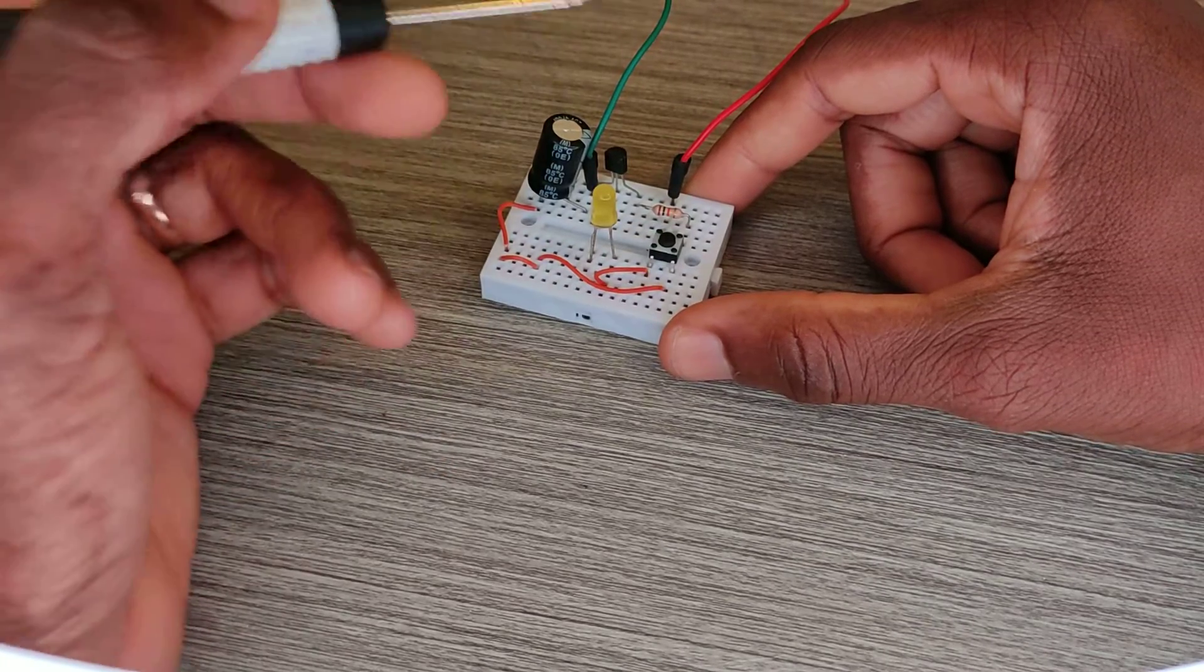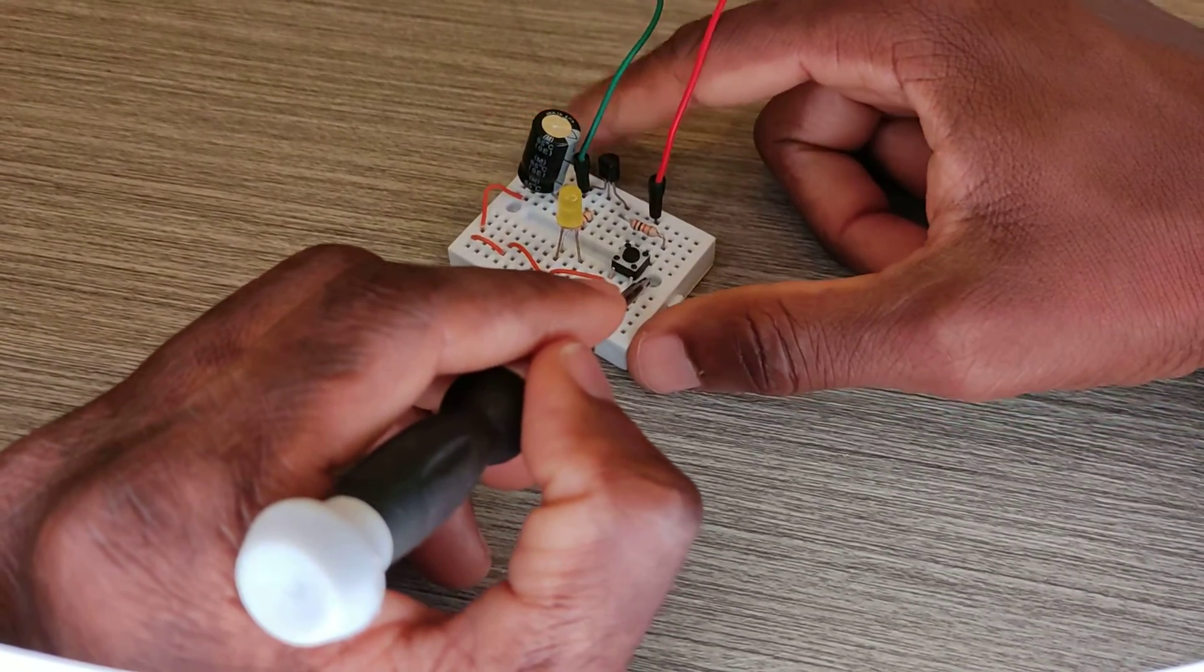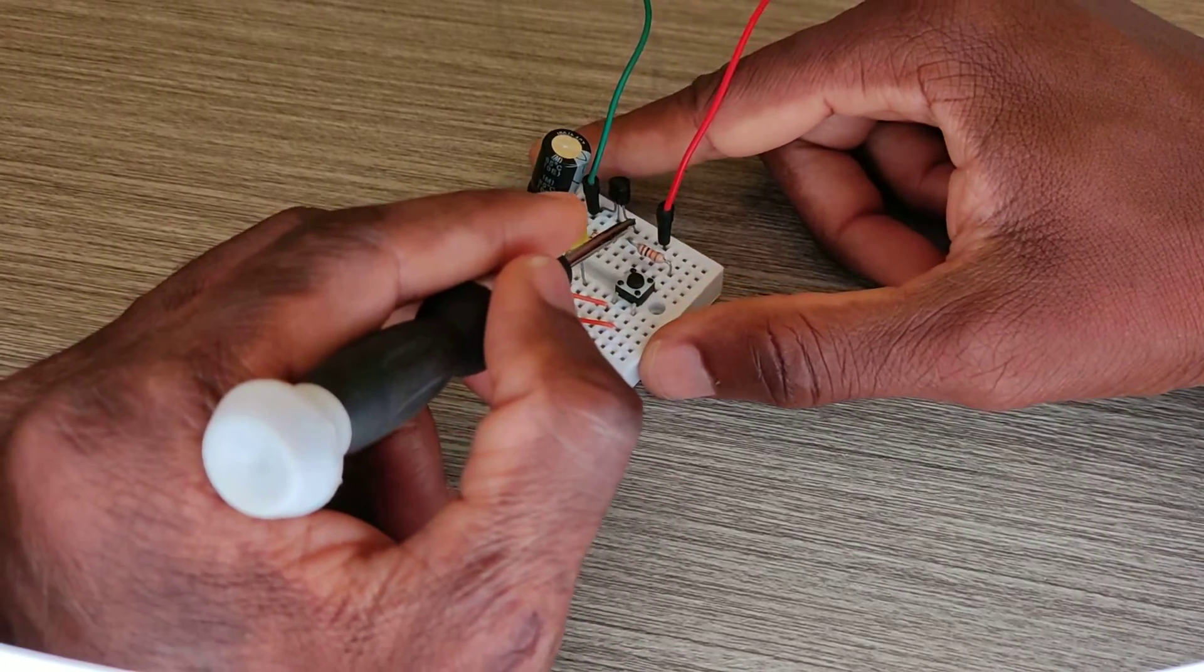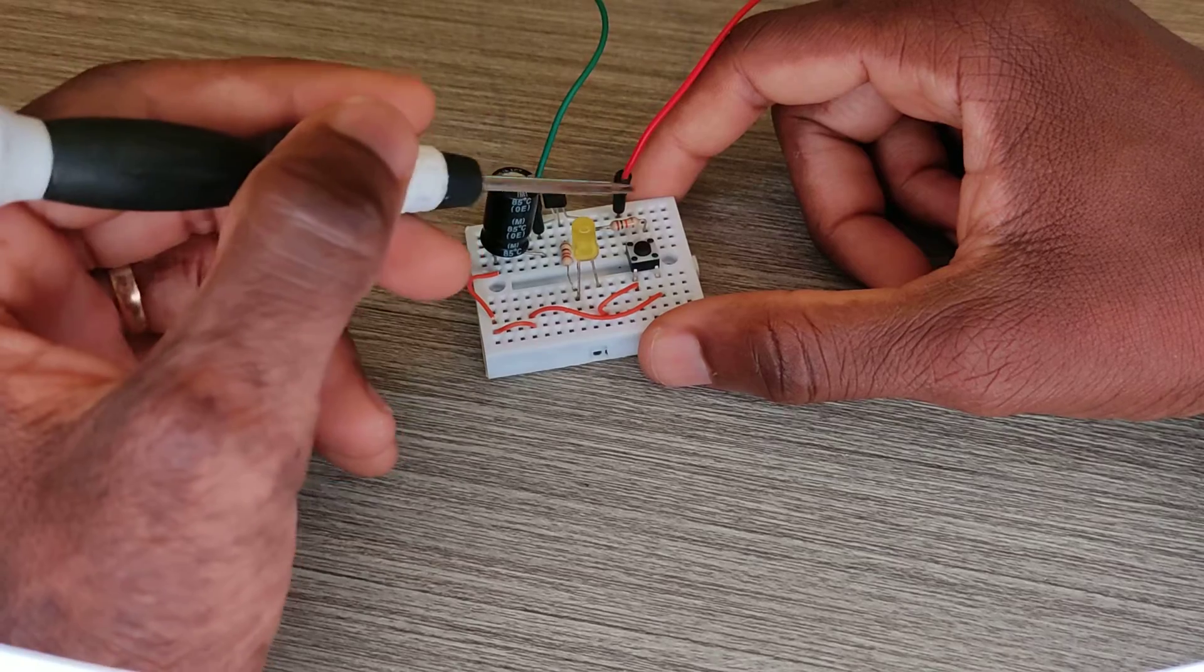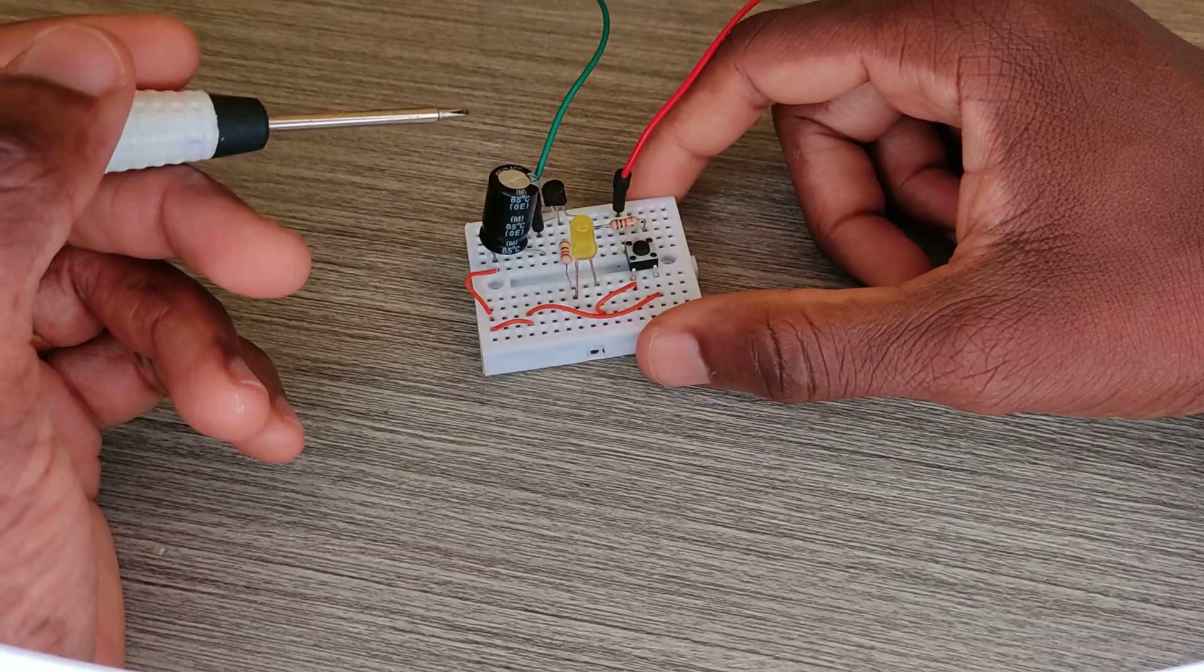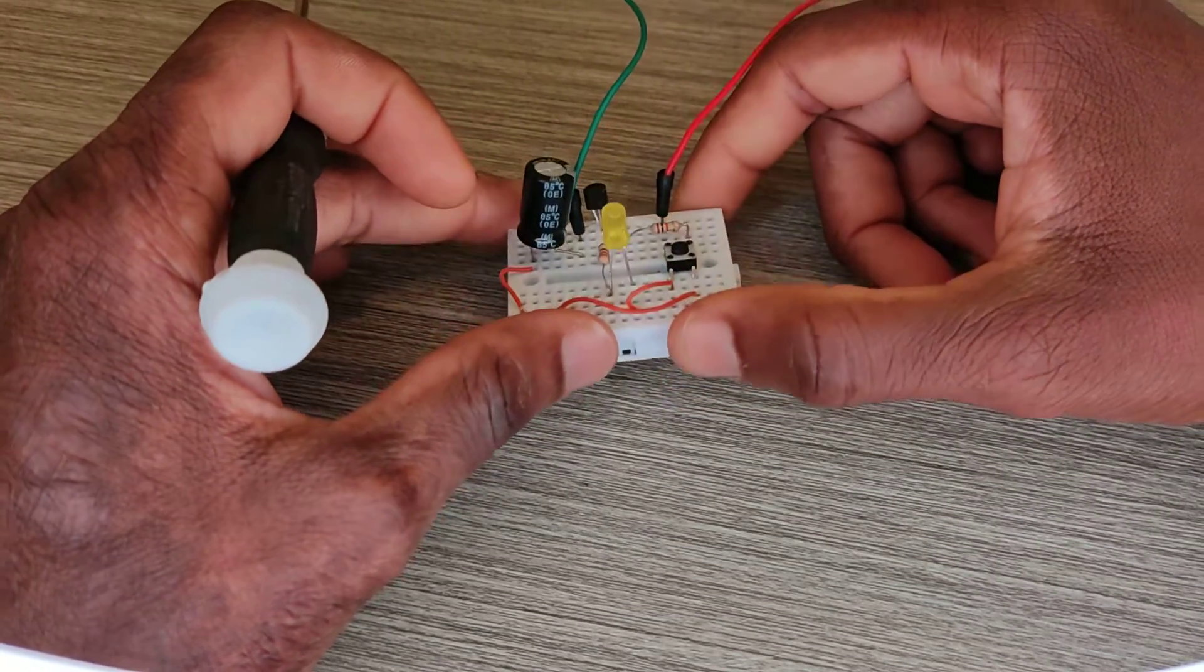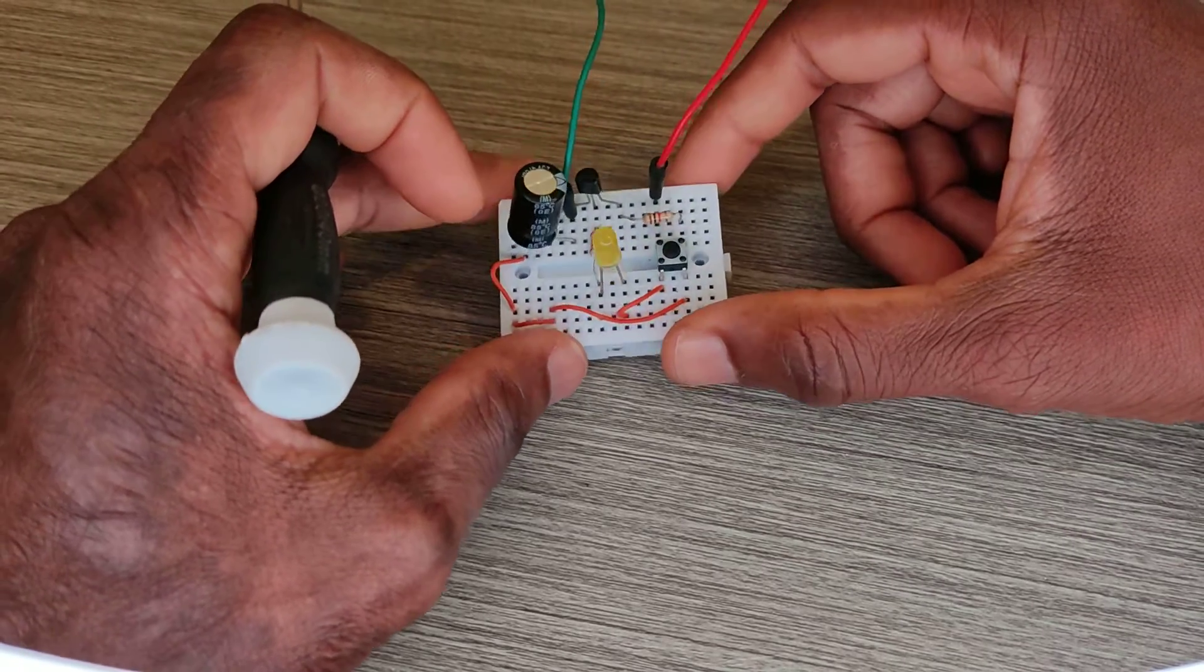Now from this pin of the push button to the base of my transistor, I've got the 10k resistor. Okay guys, that's our build. I think it's clear.